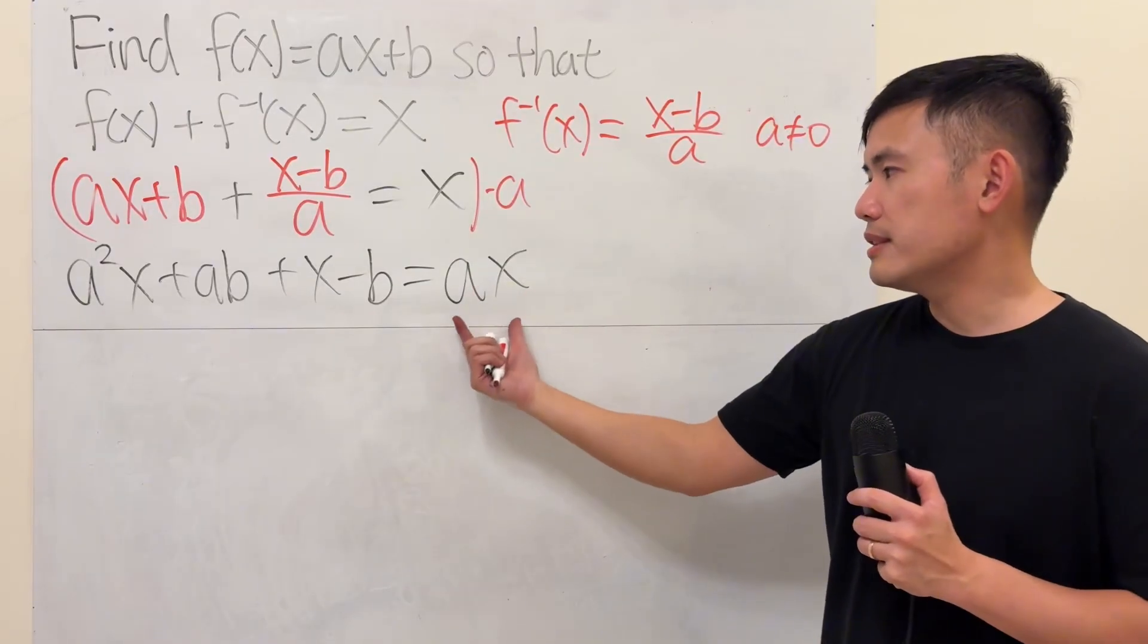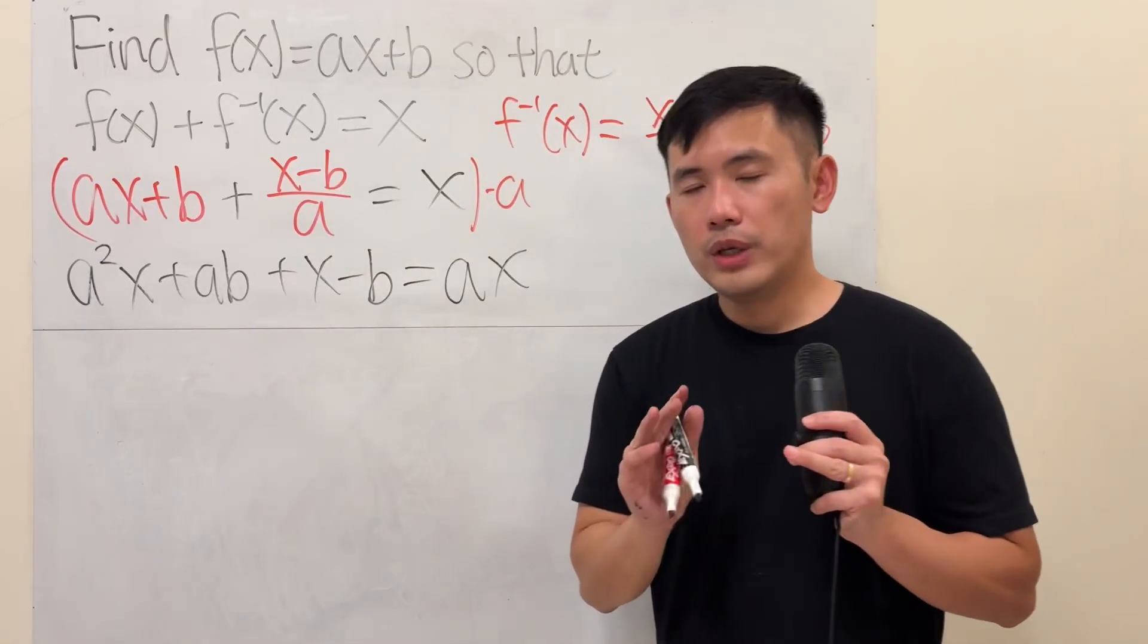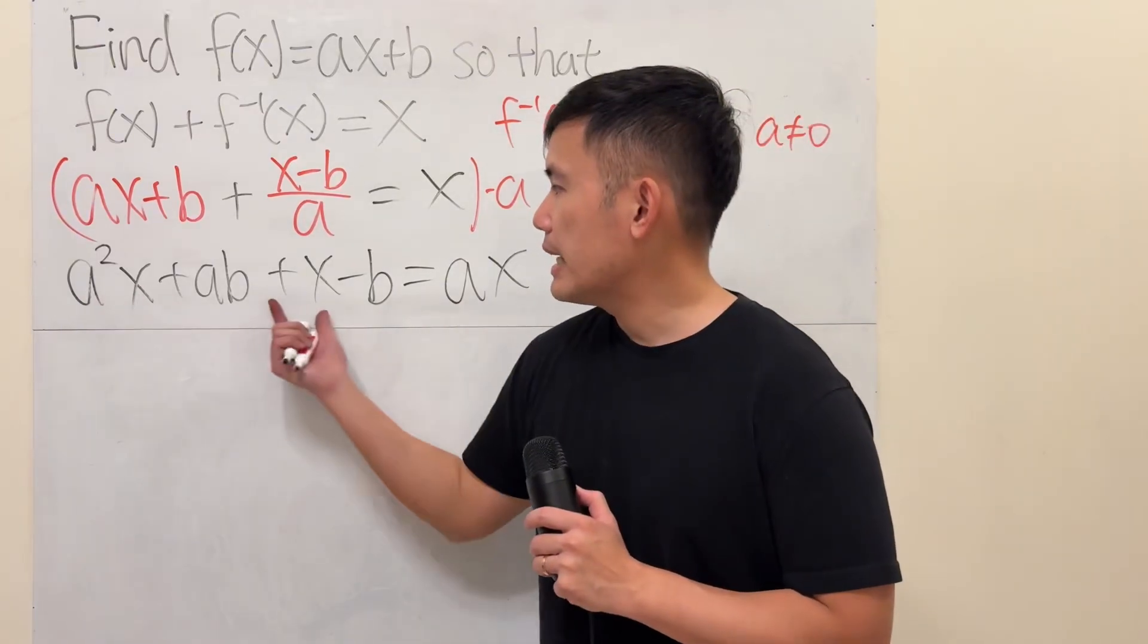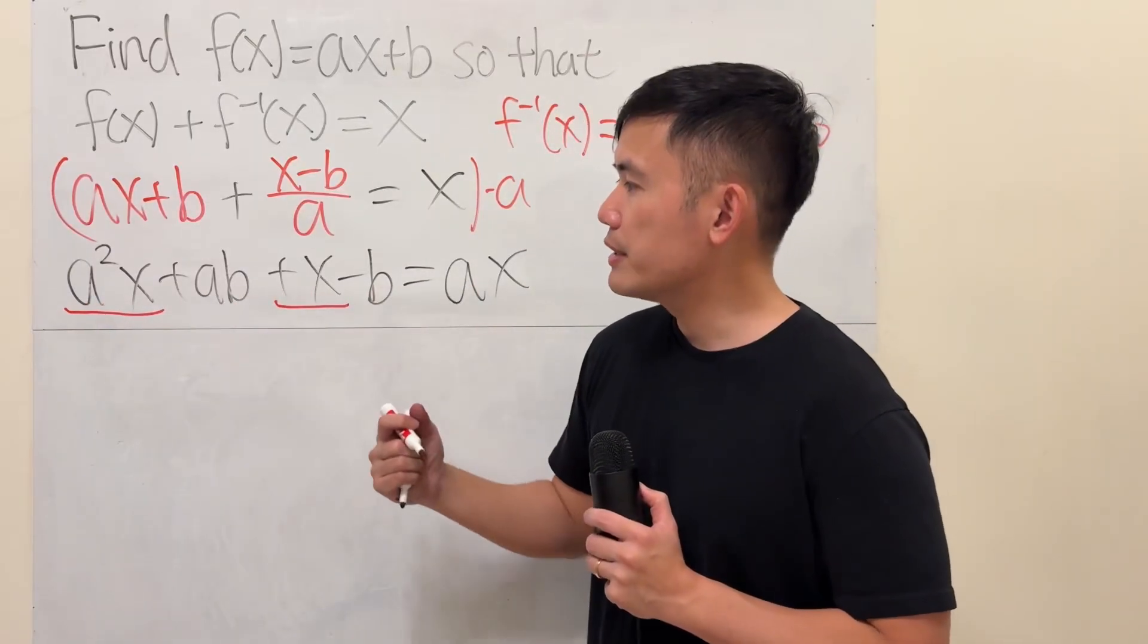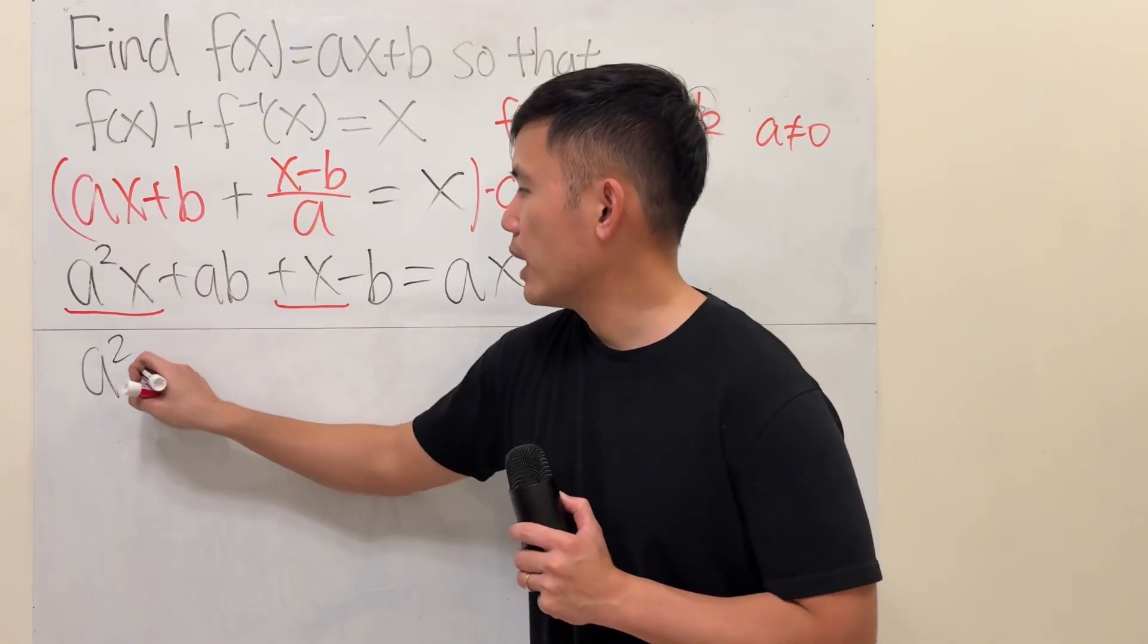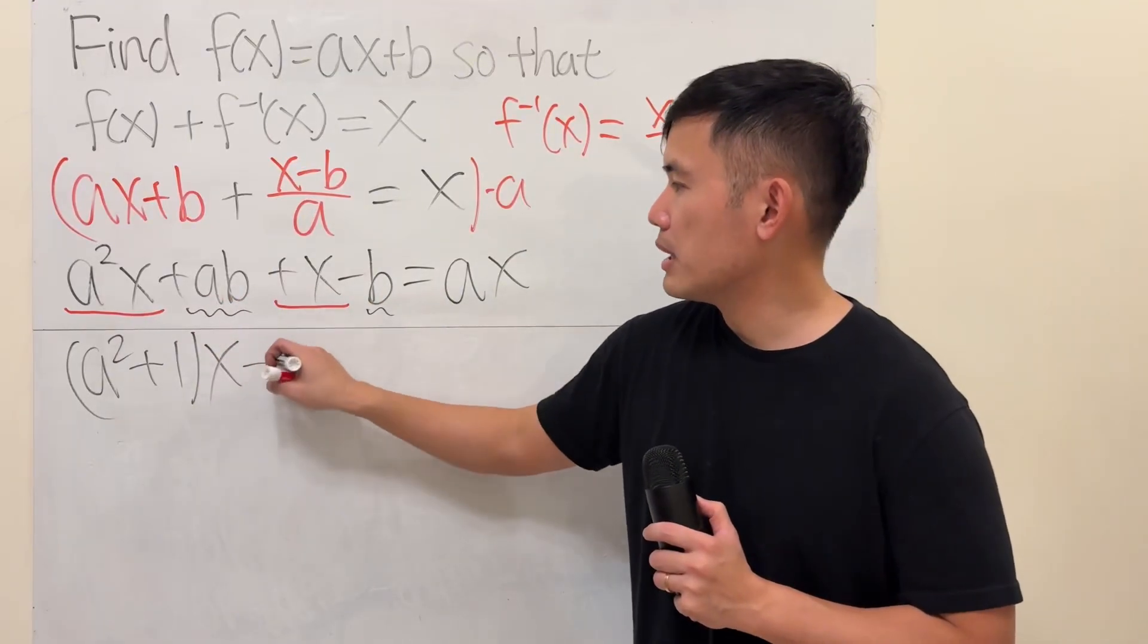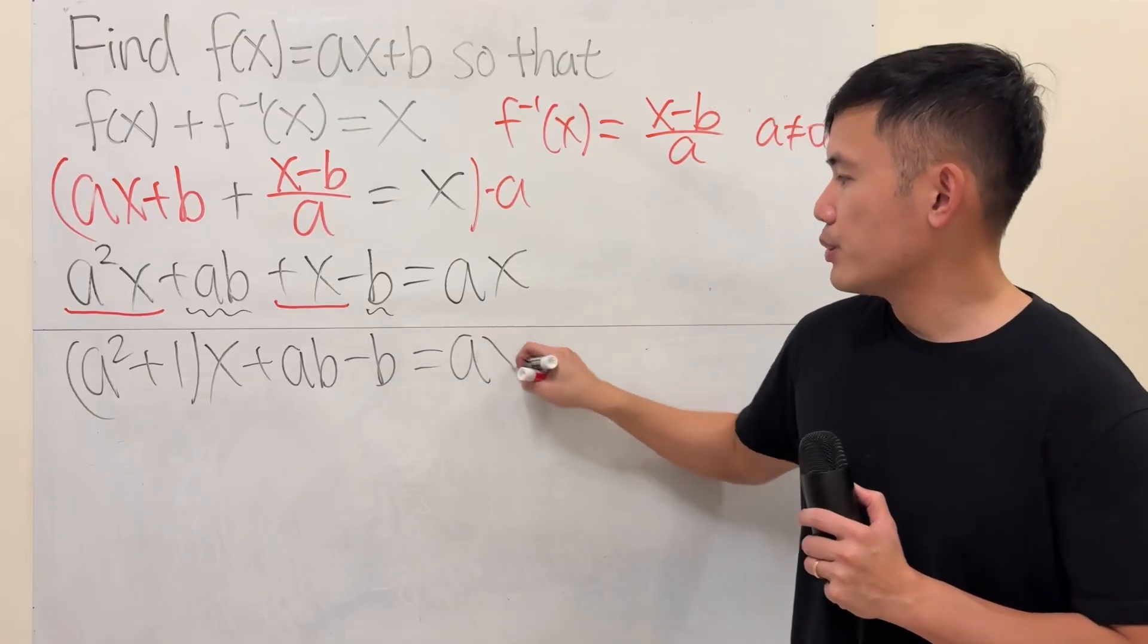Now, on the right-hand side, we have ax. On the left-hand side, we have a polynomial. We have to figure out the terms with x, and then the term with all the constants. This and that, they both have x. So, focus on them. Factor out the x. We get a squared plus 1. And then we'll put the x down here. These are just the constant terms. So, plus ab minus b is equal to ax.